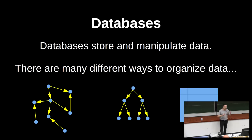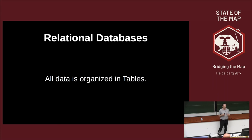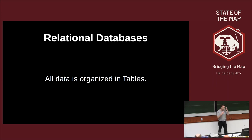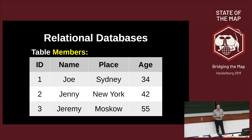Background: relational databases. There are many ways you can organize data—you can store it in a blob, you can have a tree, or you can organize it in a table, which is what a relational database does. All the data is stored in tables, and this is already something a little bit different from how OpenStreetMap thinks about its data model. For example, you might have a table of members of an organization with a name, a place where they live, and an age.